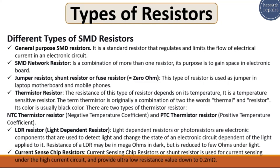Third, the jumper resistor, also called the shunt resistor or fuse resistor. Its value equals zero ohms. This type of resistor is used as a jumper in laptop motherboards and mobile phones.